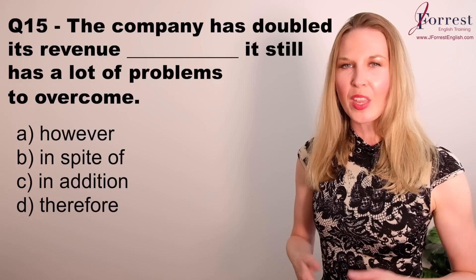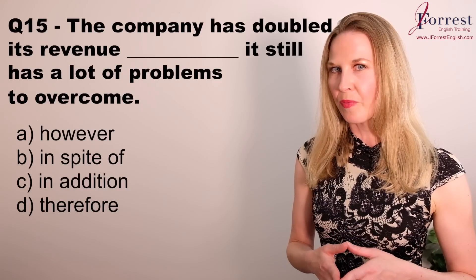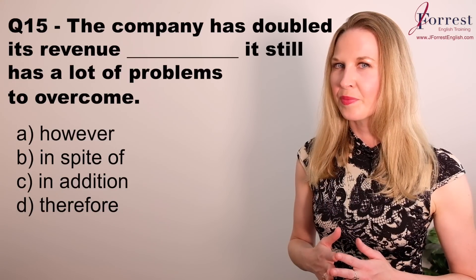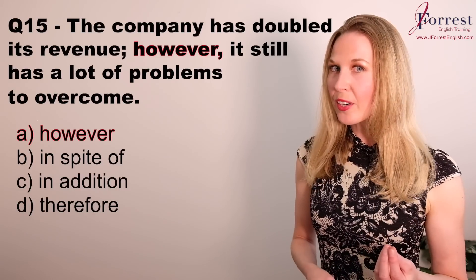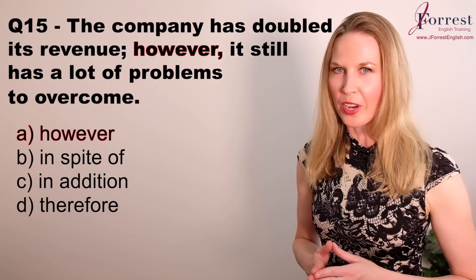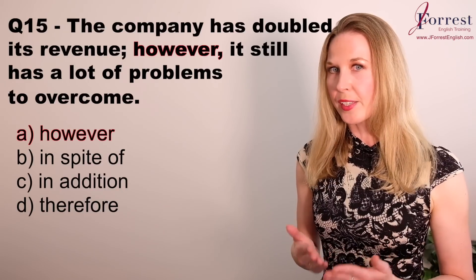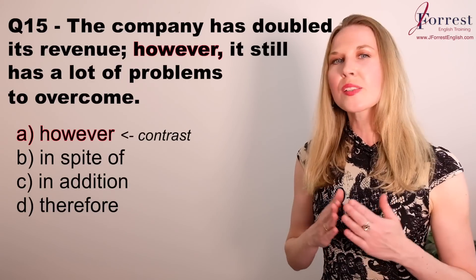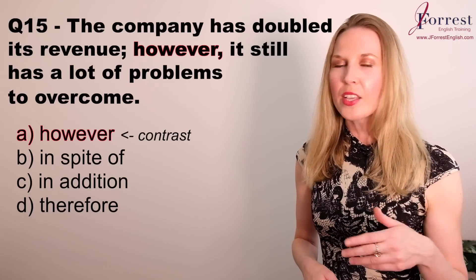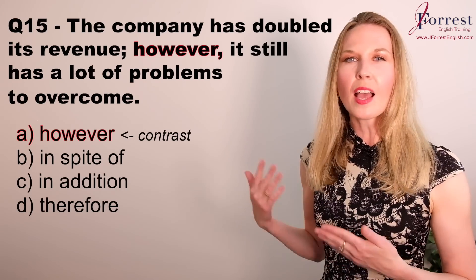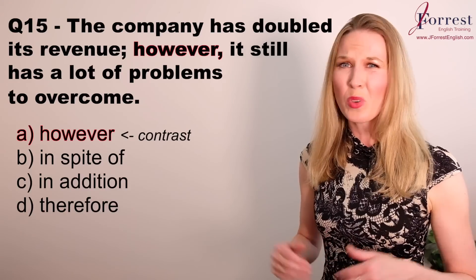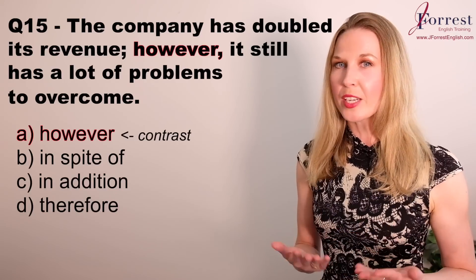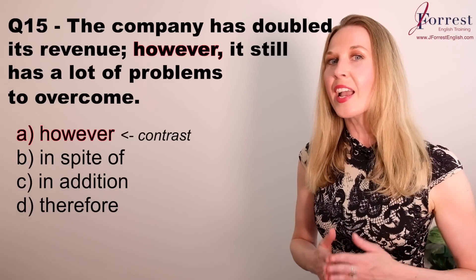And finally, question fifteen: the company has doubled its revenue. __ it still has a lot of problems to overcome. The answer is 'however.' All the options are transition words, but the only one used for contrast is 'however.' This is a contrast because idea one — the company doubled its revenue — is positive, while idea two — there are still problems — is negative. If you want to learn more about transition words, I'll leave a link in the description.